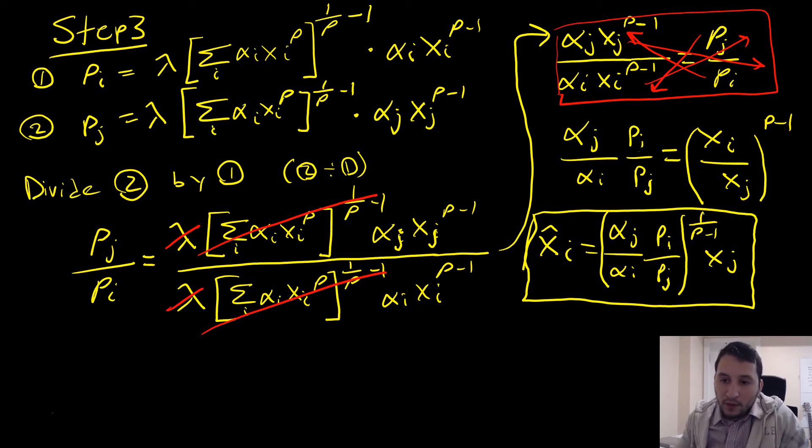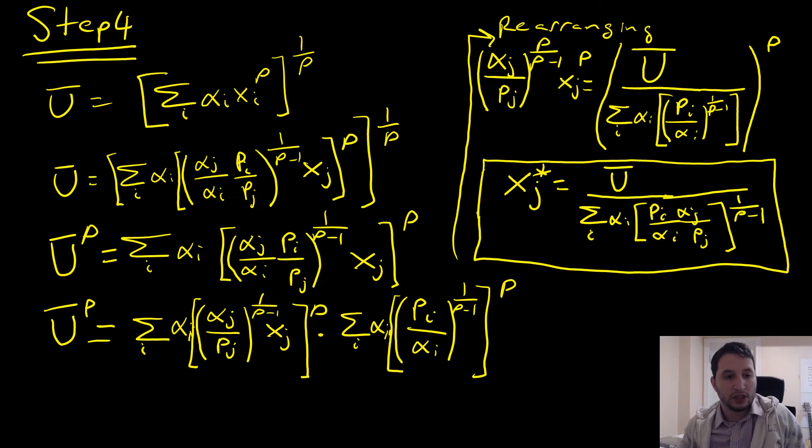And with further rearrangement, we solve for our intermediate bundle x i hat, which is the following. So next we're going to sub our intermediate bundle into our utility constraint putting our x i hat right here.